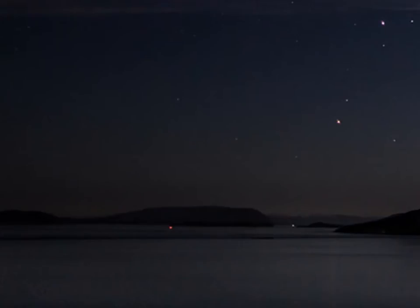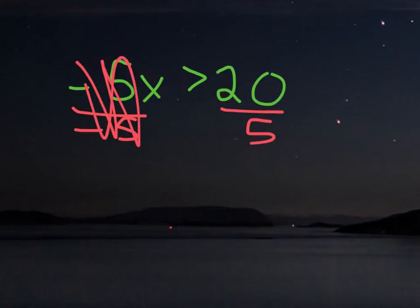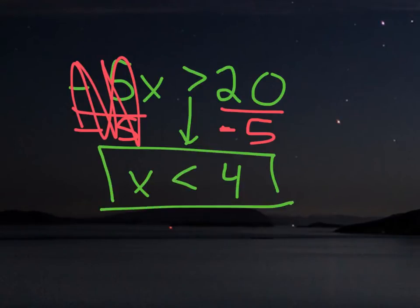Let's try another one: negative 5x is greater than 20. Similar idea — to get x by itself, I'm going to divide both sides by negative 5, canceling those out. We get x on the left side and 4 on the right side. However, since we divided by a negative number, it's going to flip the sign. So instead of greater than, it's going to be less than: x is less than 4.